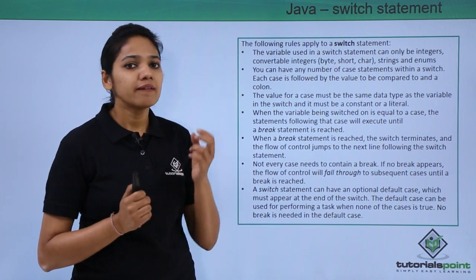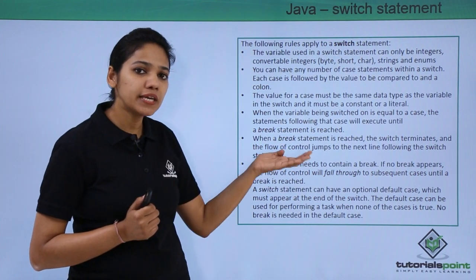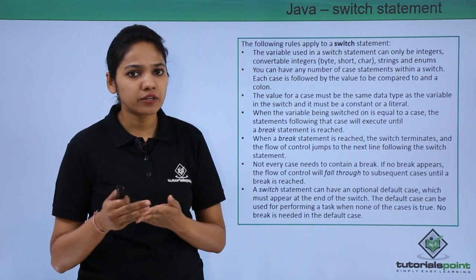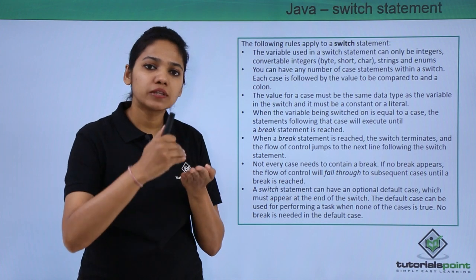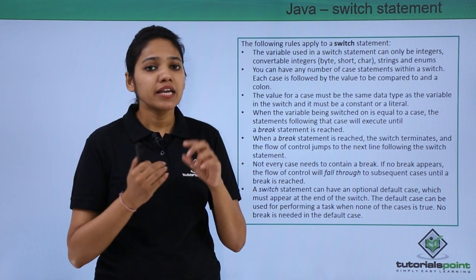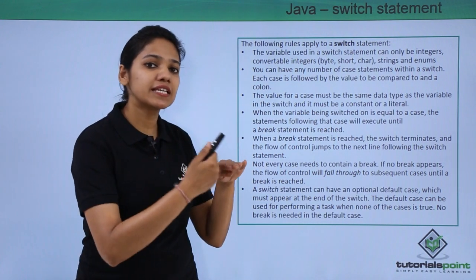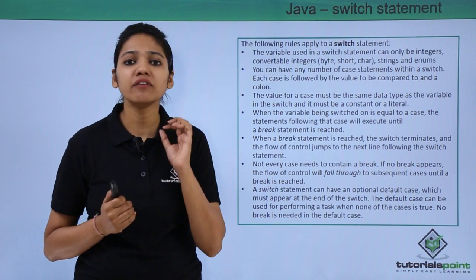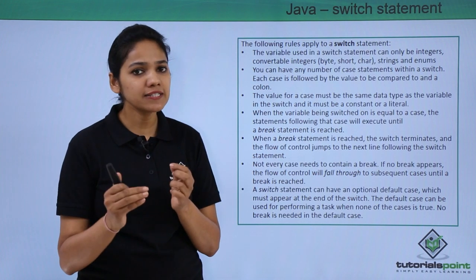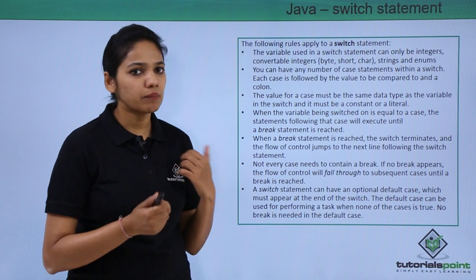Consider the example where a student obtained grade B. First it checks case A — not satisfied. Then case B — yes, satisfied. It prints that the student is 'Very Good'. If a break keyword follows that statement, the control terminates and exits the switch. If no break is present, it continues checking C, D, E, and so on. Finally, if none of the values match, you can have a default case that executes a block of statements when no case is satisfied.